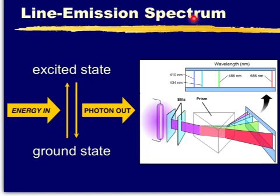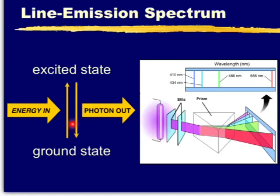Line emission spectrum. Here it shows that some energy is given to atoms at ground energy state, and these atoms are raised to a higher energy state called the excited state. Later on, these atoms will lose all the energy by giving out photons of different sizes, thus producing the characteristic colours.